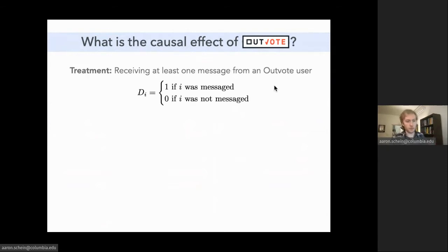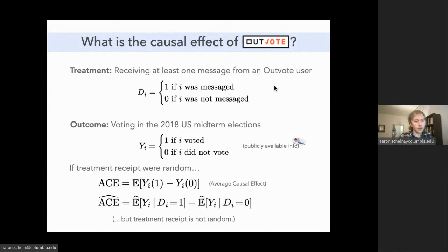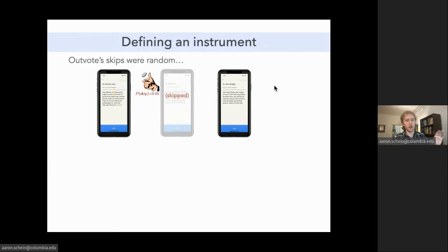We're going to define the treatment to be binary. If a subject was messaged by any Outvote user during the study period, then we're going to say that they were treated and zero otherwise. The outcome we're ultimately interested in is whether that subject voted. This is publicly available information, not who you voted for, but whether you voted. Now, if the treatment were randomized, we would be able to estimate the average causal effect. But in this case, whether a subject actually received a message is not actually randomized. It is endogenous.